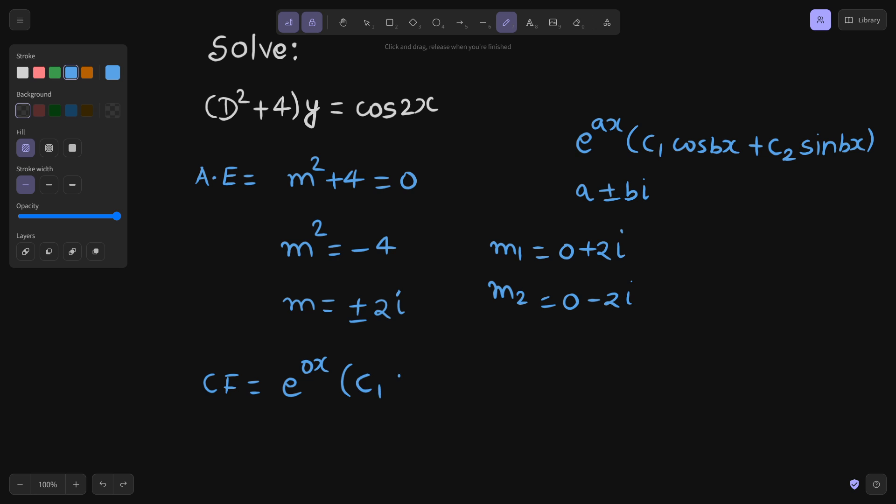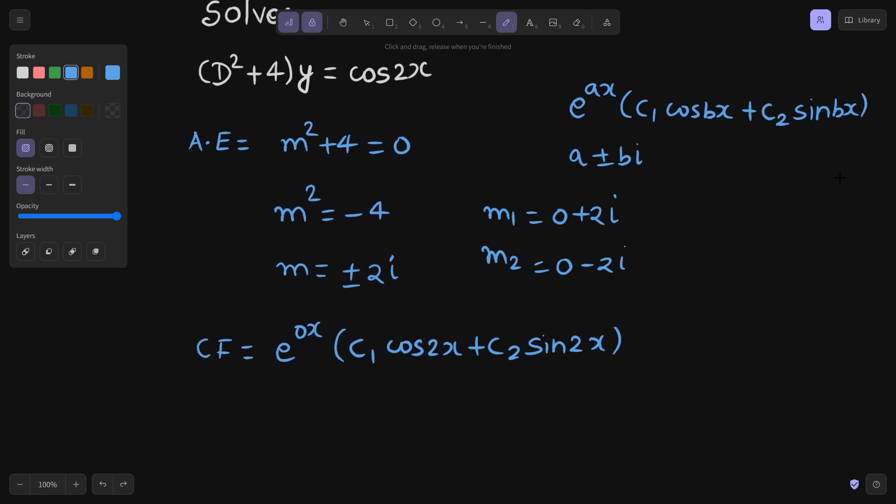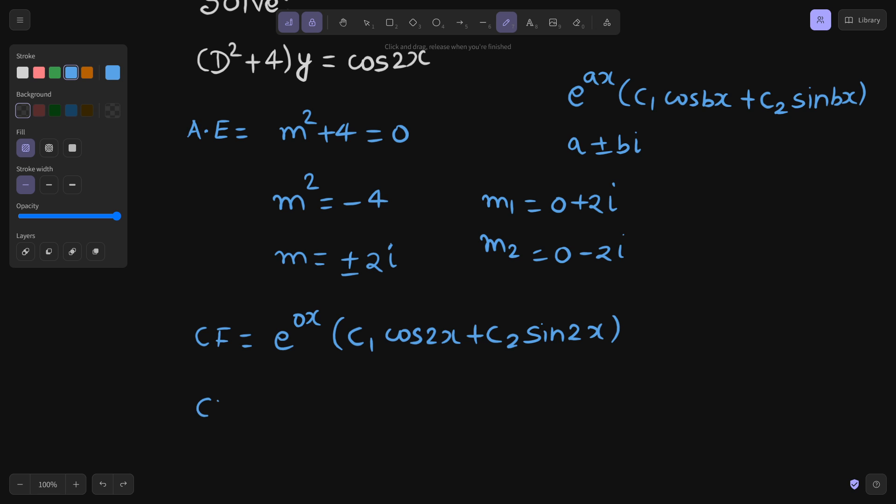E^(0x) is 1. Your complementary function is C1 cos 2x plus C2 sin 2x. This is your complementary function.